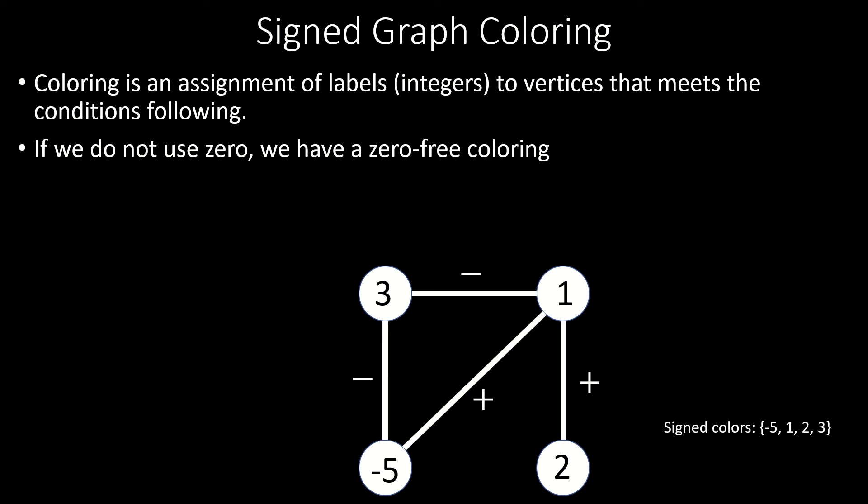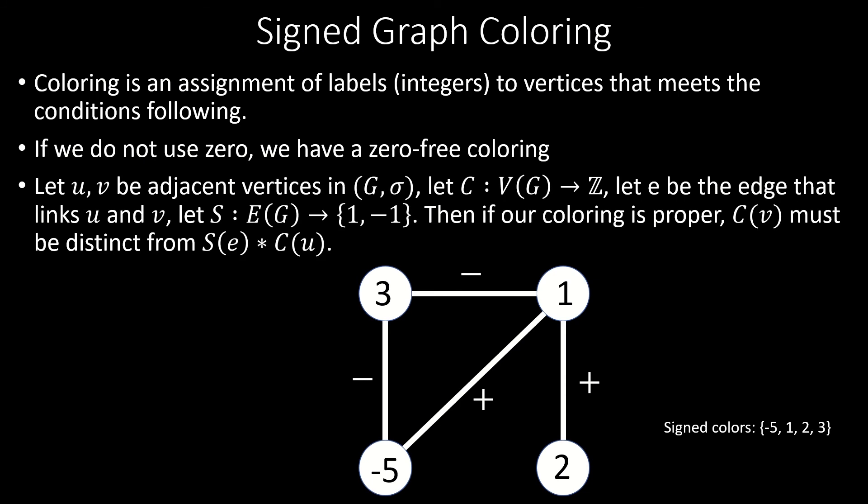Now, as with colorings of unsigned graphs, we have a restriction on what colors we can assign to adjacent pairs of vertices in a signed graph. Let u and v be adjacent vertices. Let c be our coloring function that labels vertices with integers. Let e be the edge that links u and v. And let s be the function that assigns positive 1 to positive edges and negative 1 to negative edges in our sign graph. Then c of v must be distinct from s of e times c of u.